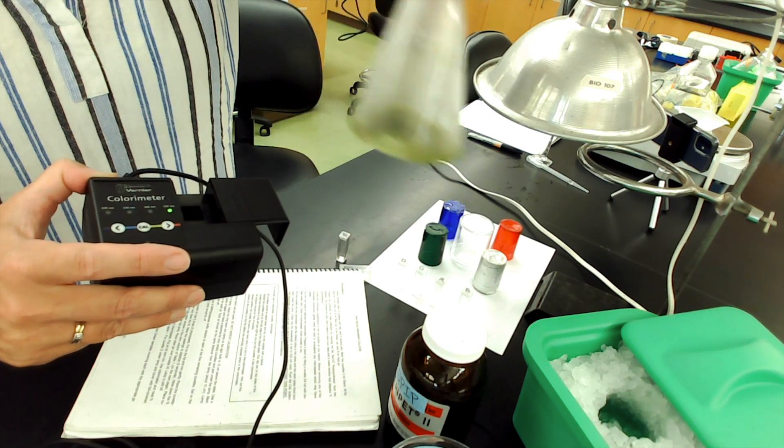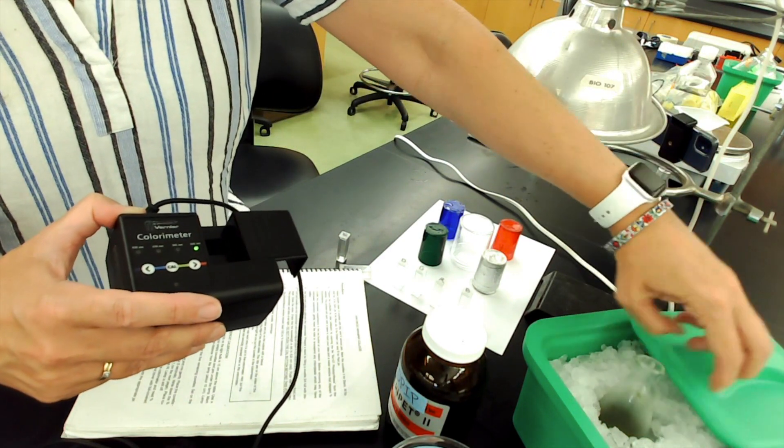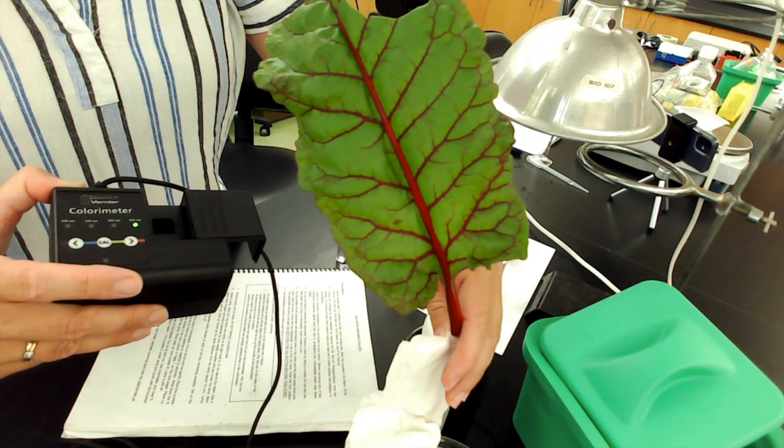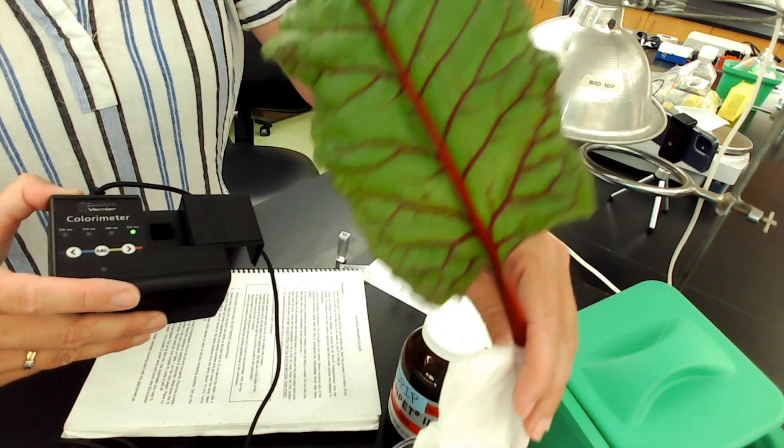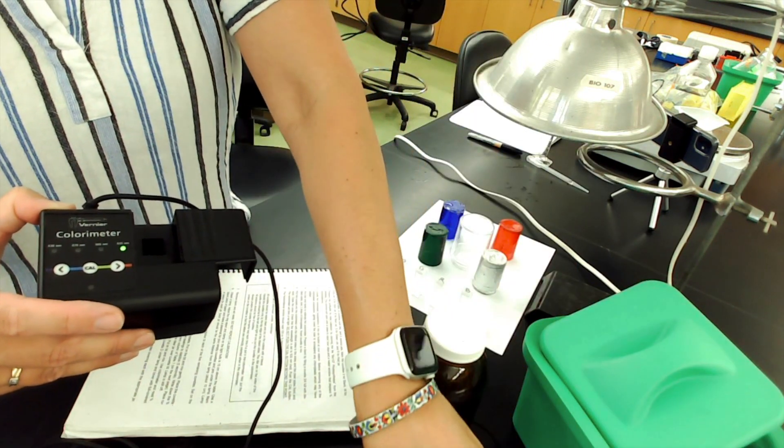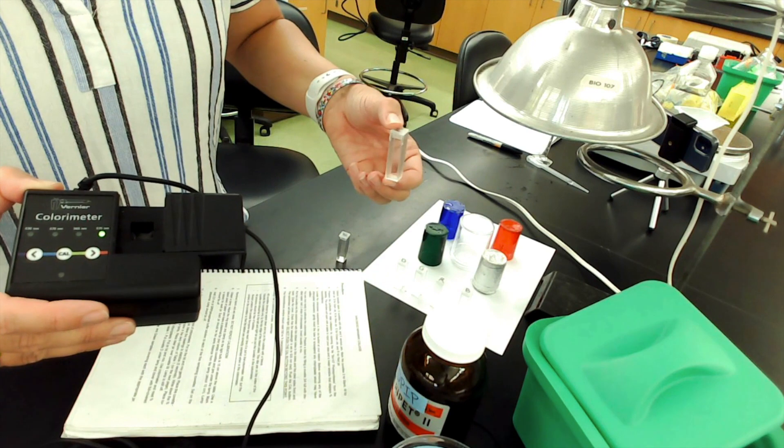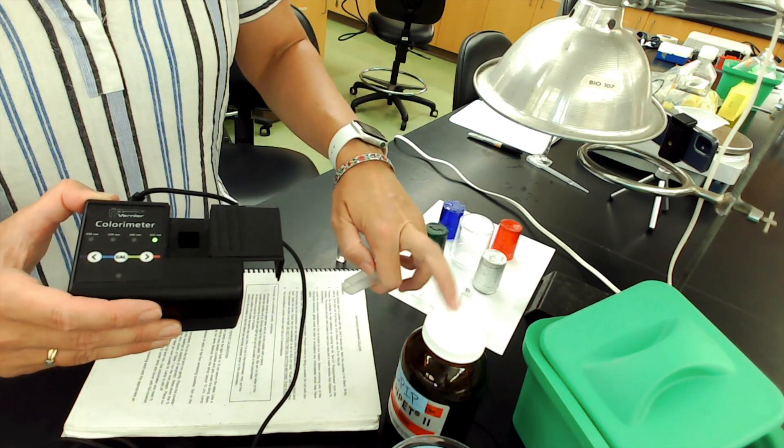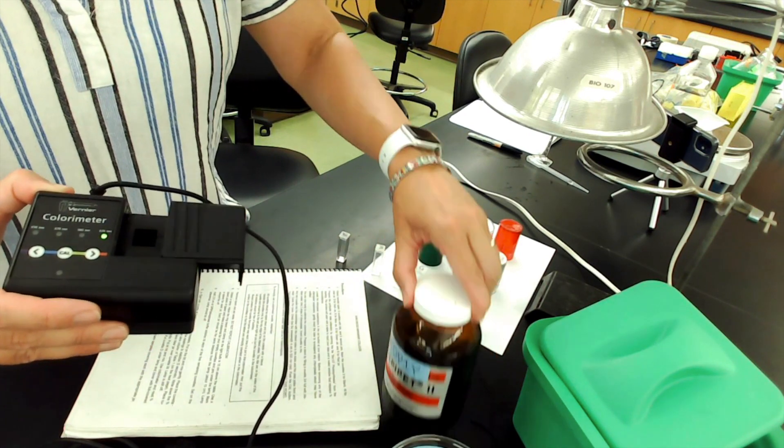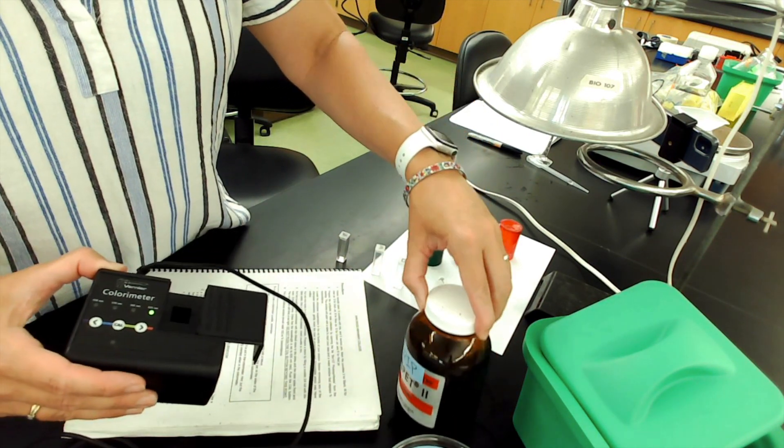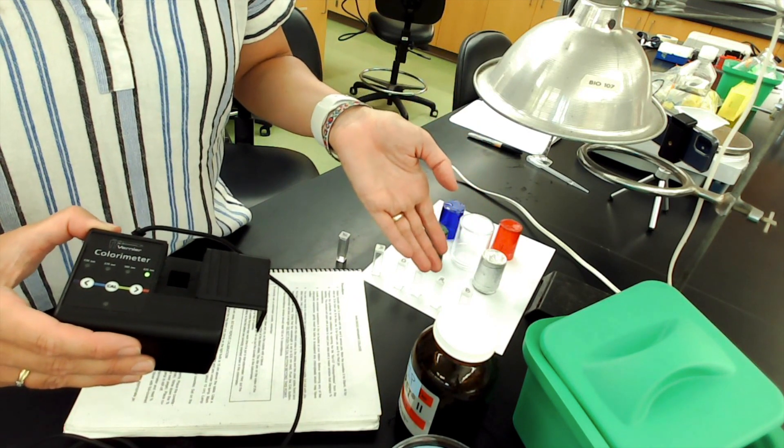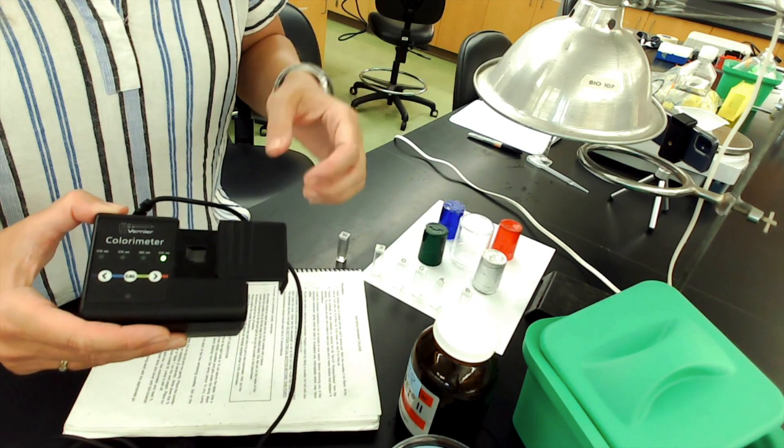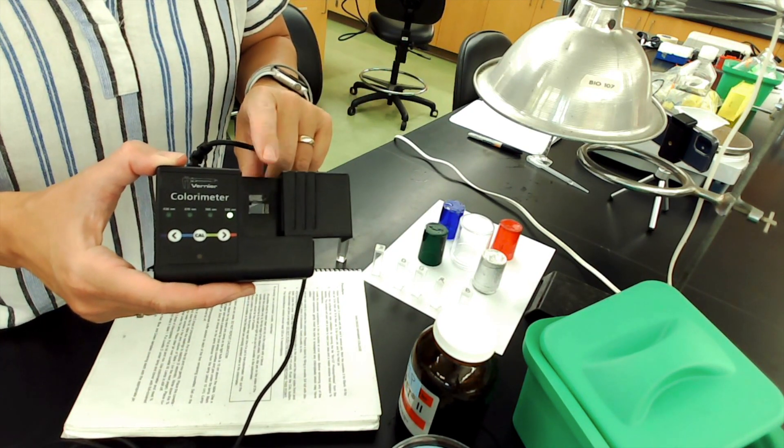These are chloroplasts that I extracted from this. It's not spinach, it's Swiss chard, but it has chloroplasts too. We're going to make a mixture of that D-PIP plus the chloroplasts. Over time, we're going to see if the D-PIP solution changes color. It's going to start out a blue color and we're going to look to see, will it change from blue to clear? Will it stay blue? The easiest way to do that is with the colorimeter.